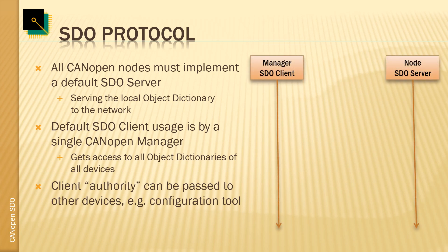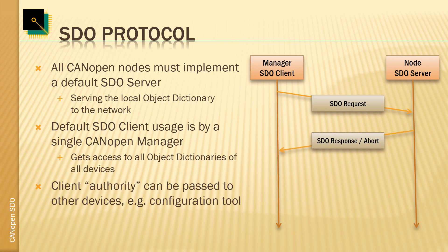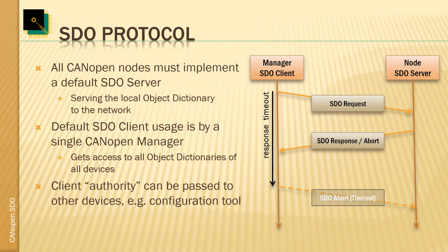Looking at the messages exchanged: the SDO client transmits the SDO request with a data read or write request, and the server must reply. It either issues the appropriate SDO response, or if the data requested is not available or there's some other error, it transmits an SDO abort. If there's no SDO response or abort from the SDO server, then after the response timeout the SDO client must transmit an SDO abort of its own — a timeout — and this informs everybody else that the transfer failed.